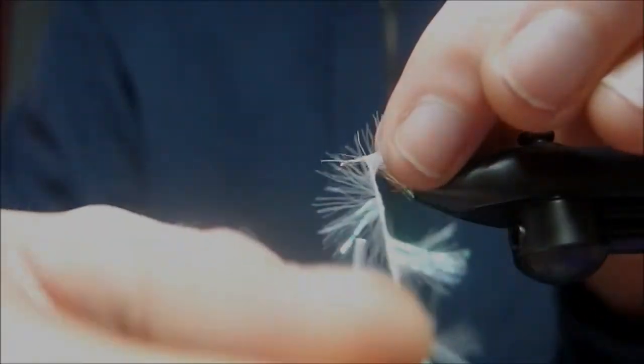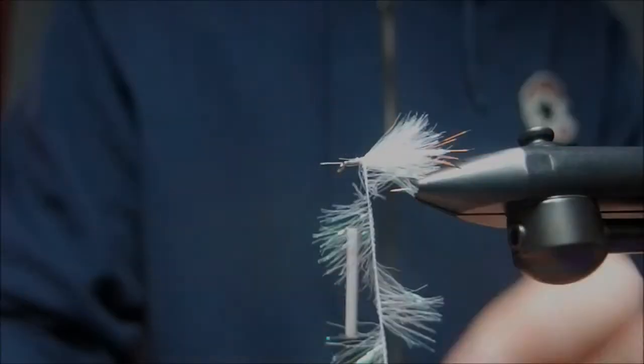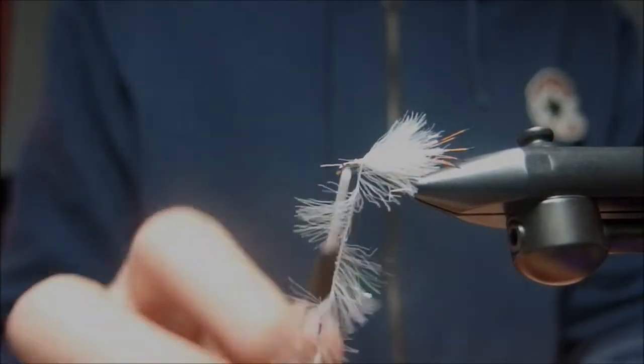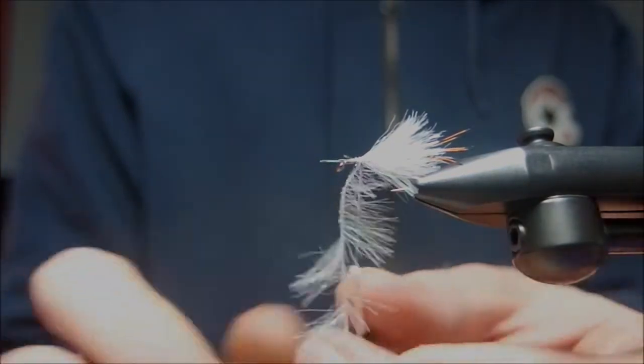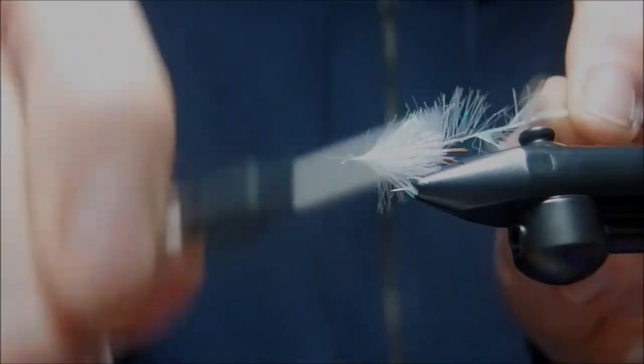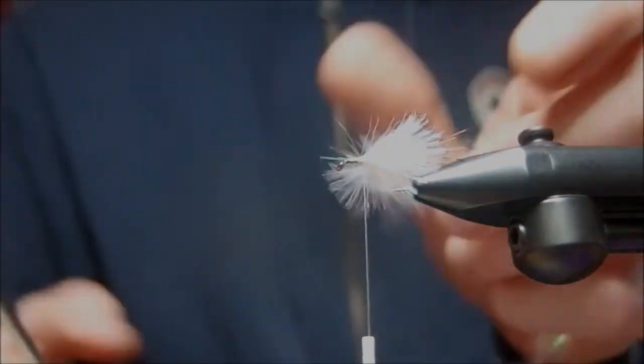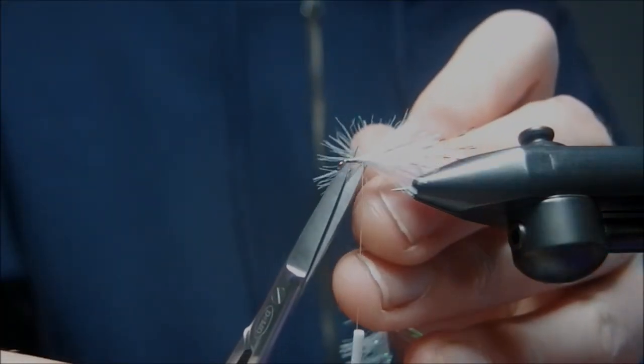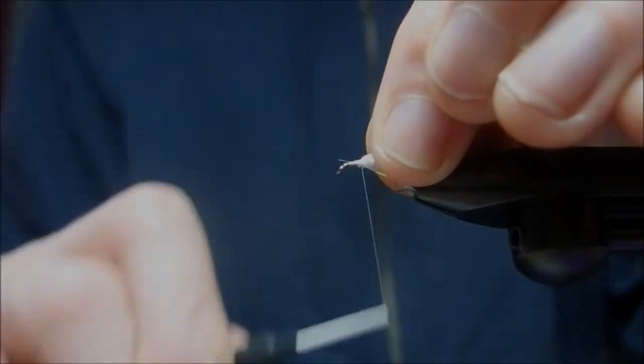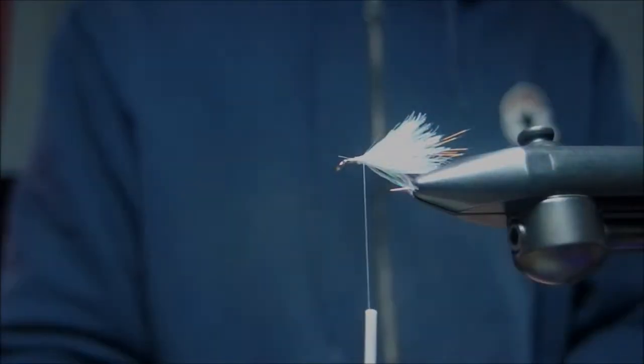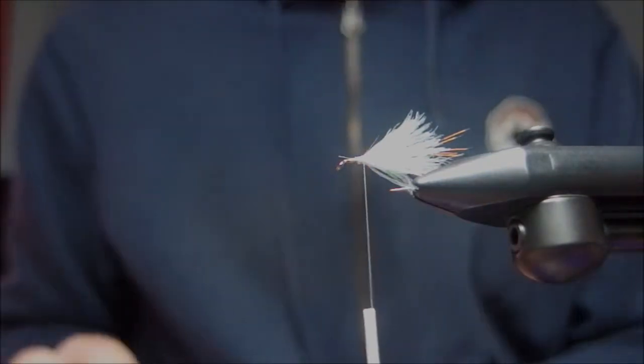Take your thread back up. Once you do it, cross over with your thread a couple of times. On the back, tie back, snip off. Pull all this stuff back and tidy up a wee bit.